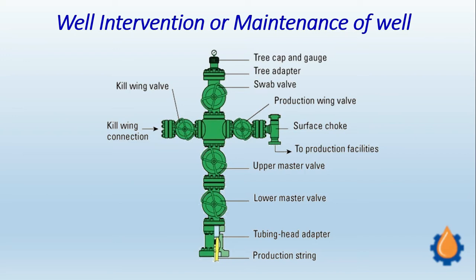On the top here there is a pressure gauge. This is called the kill wing valve. This is the lower master and upper master valve. This is called the surface choke valve. This is connected to the production header, and this is the swab valve.